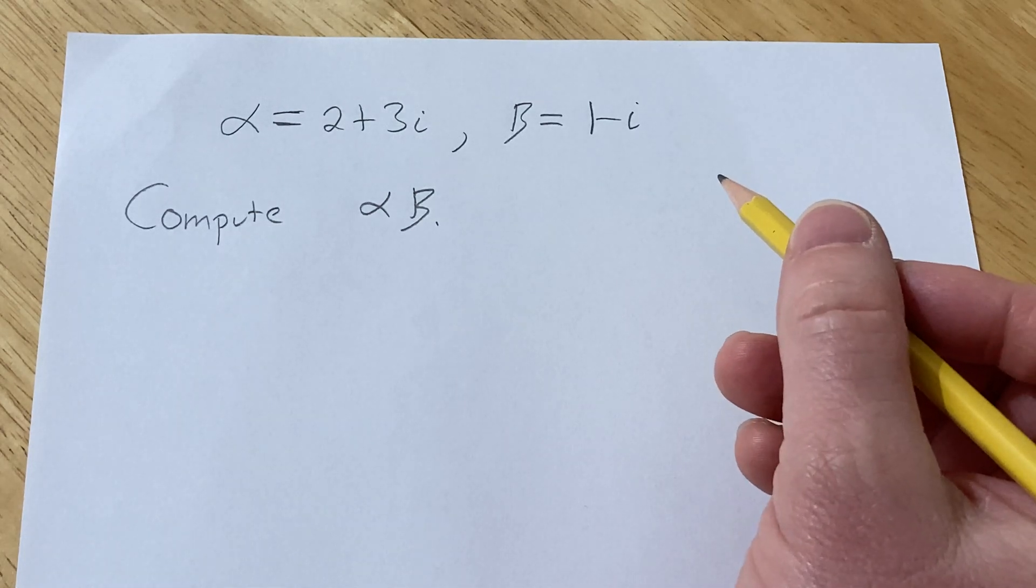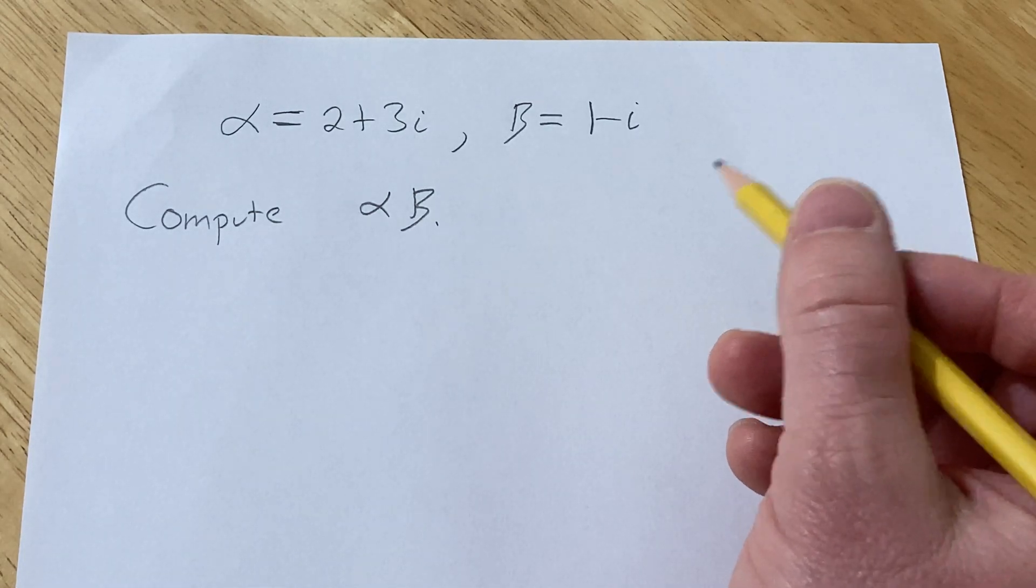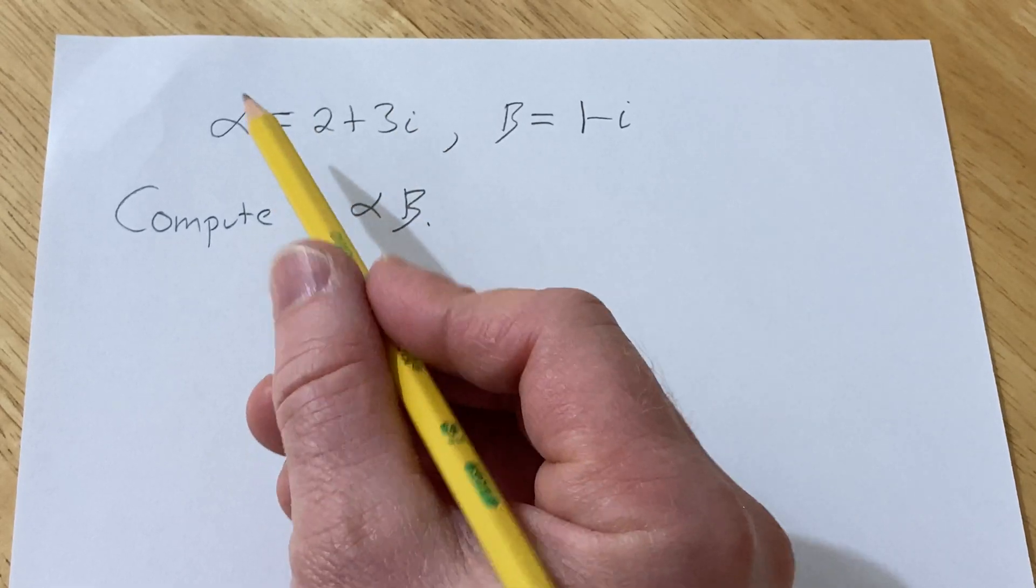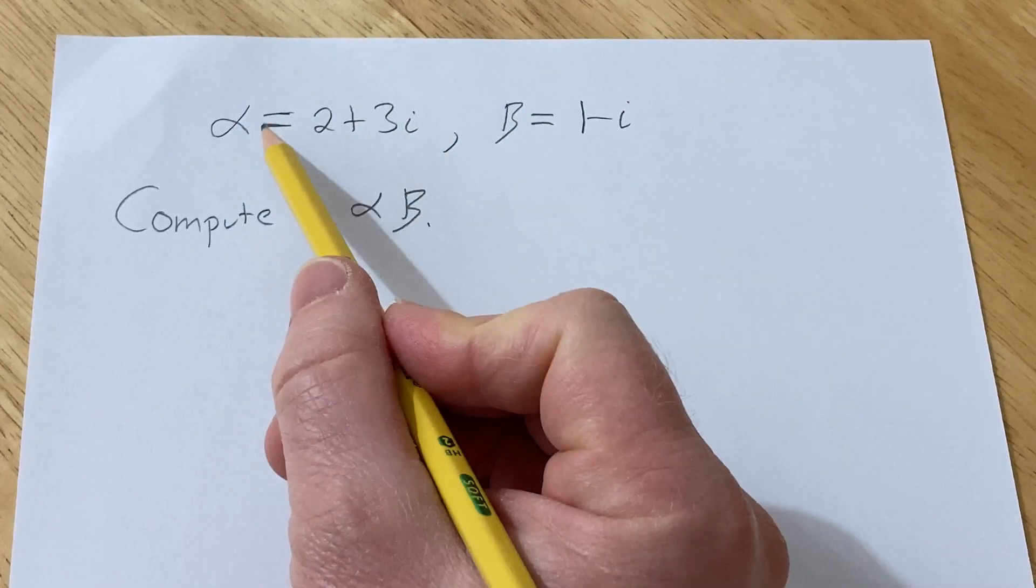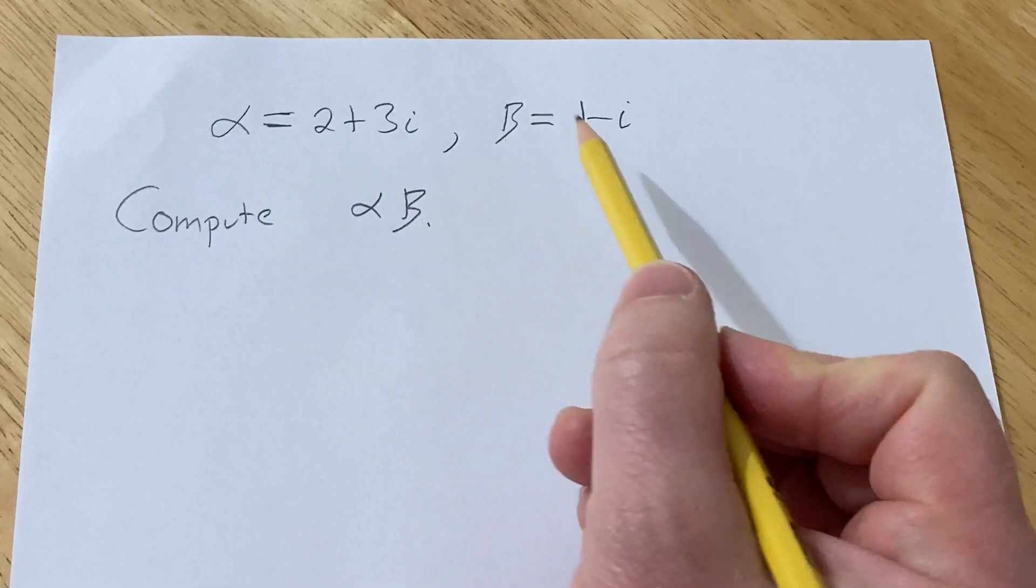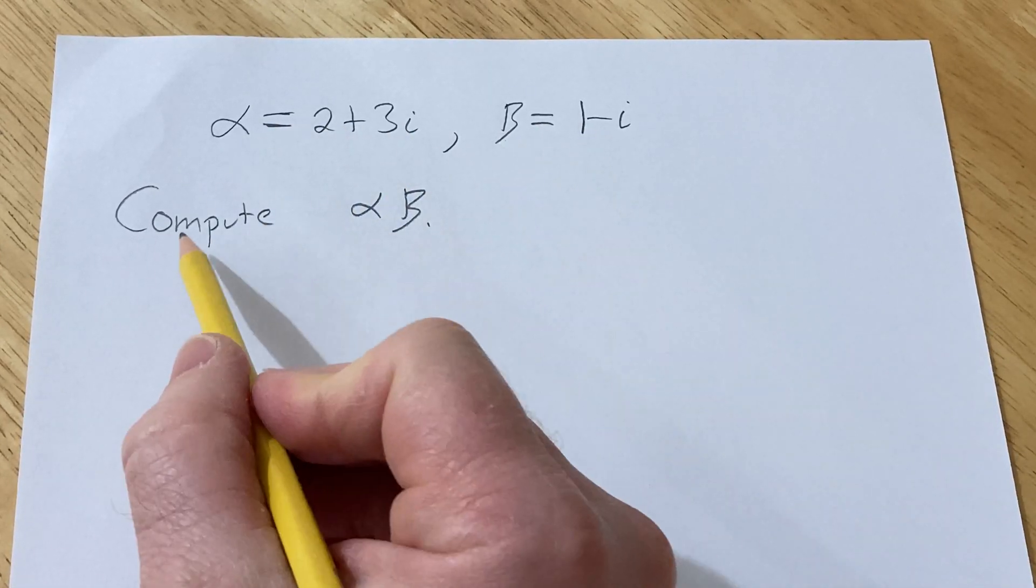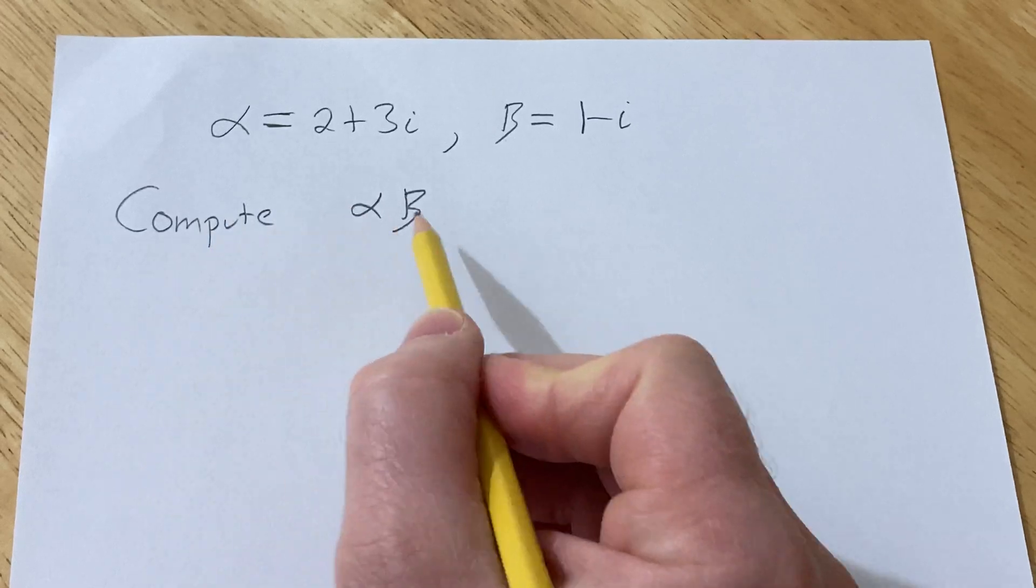Hi, in this problem I'm going to show you how to multiply two complex numbers. We have two complex numbers, one of them is called alpha and one of them is called beta. Alpha is equal to 2 plus 3i and beta is equal to 1 minus i. And the question wants us to compute alpha times beta.